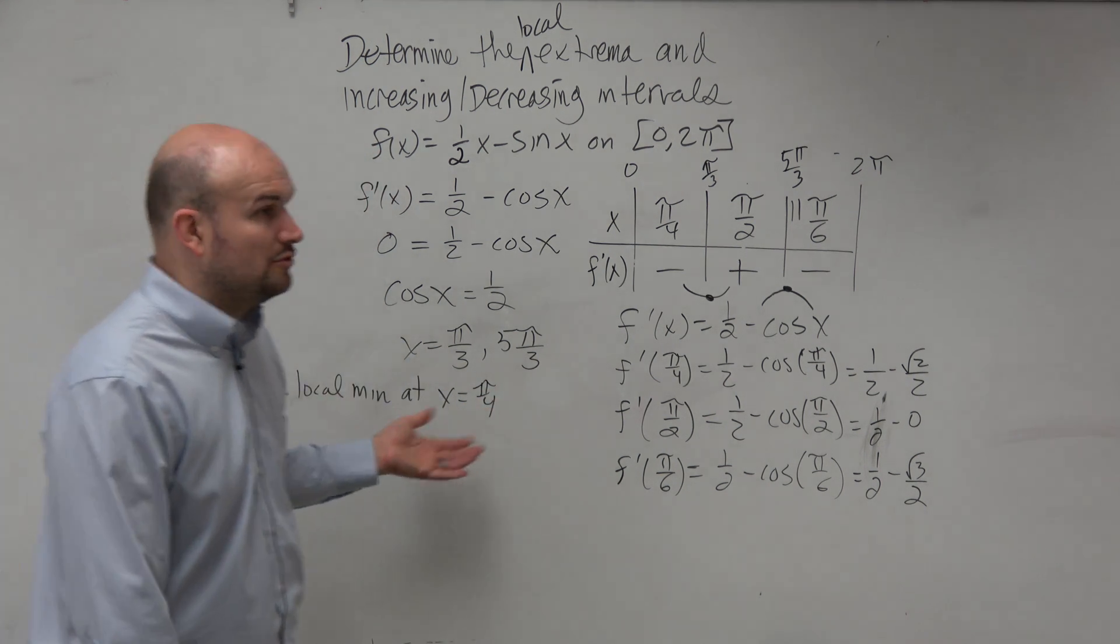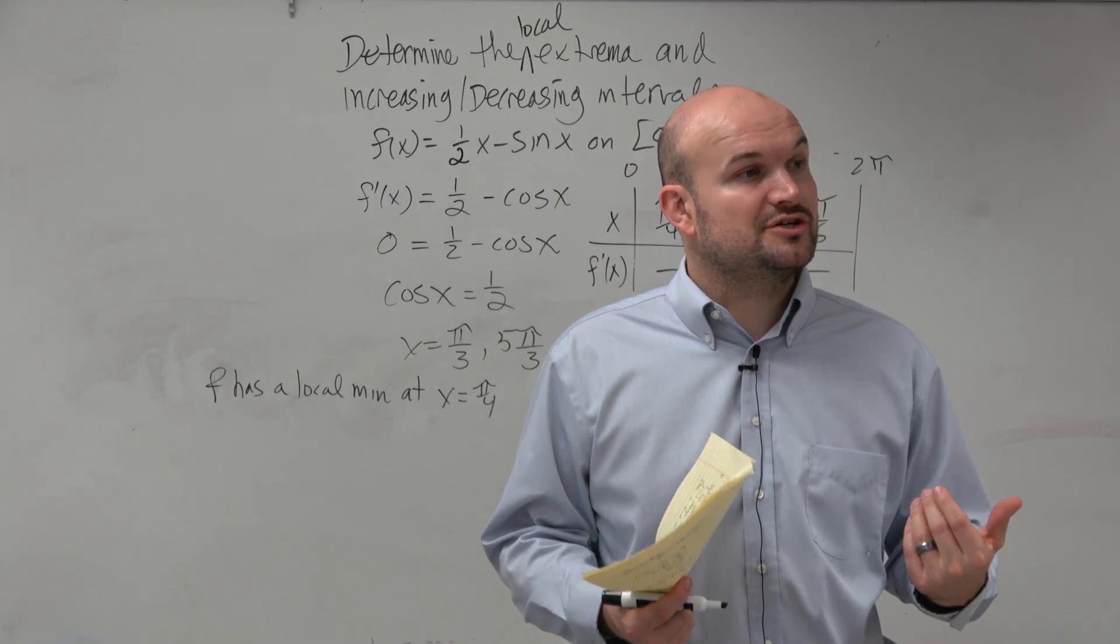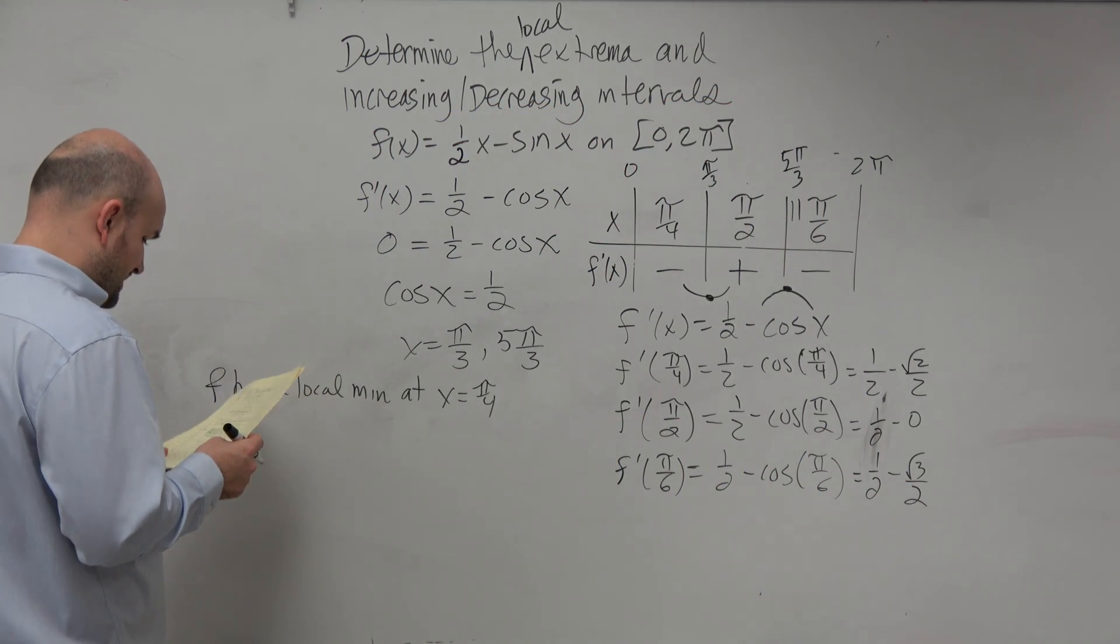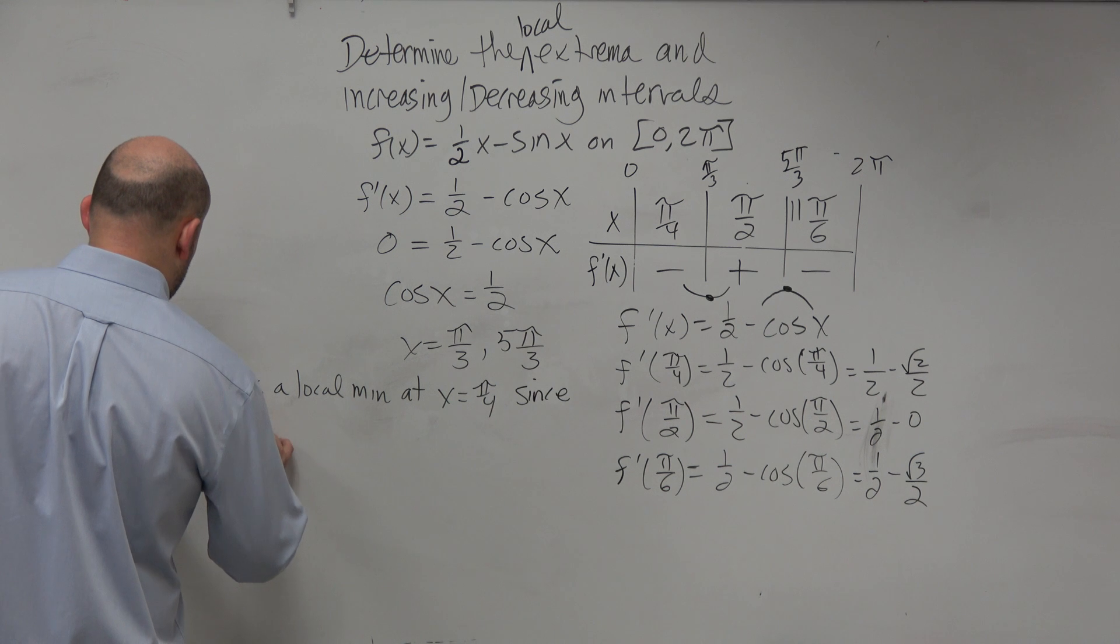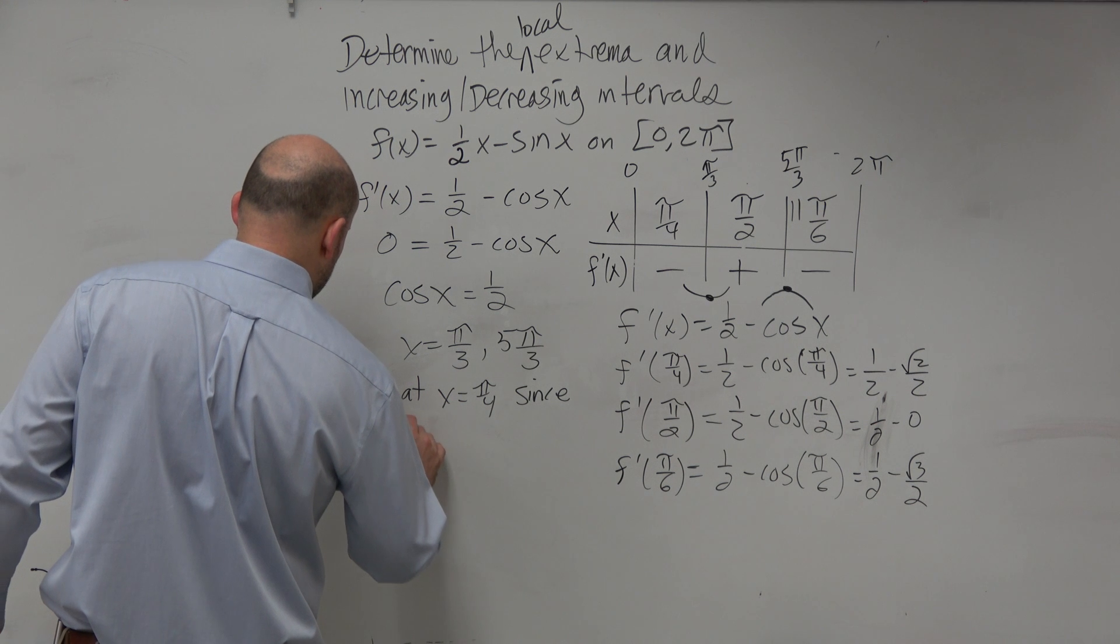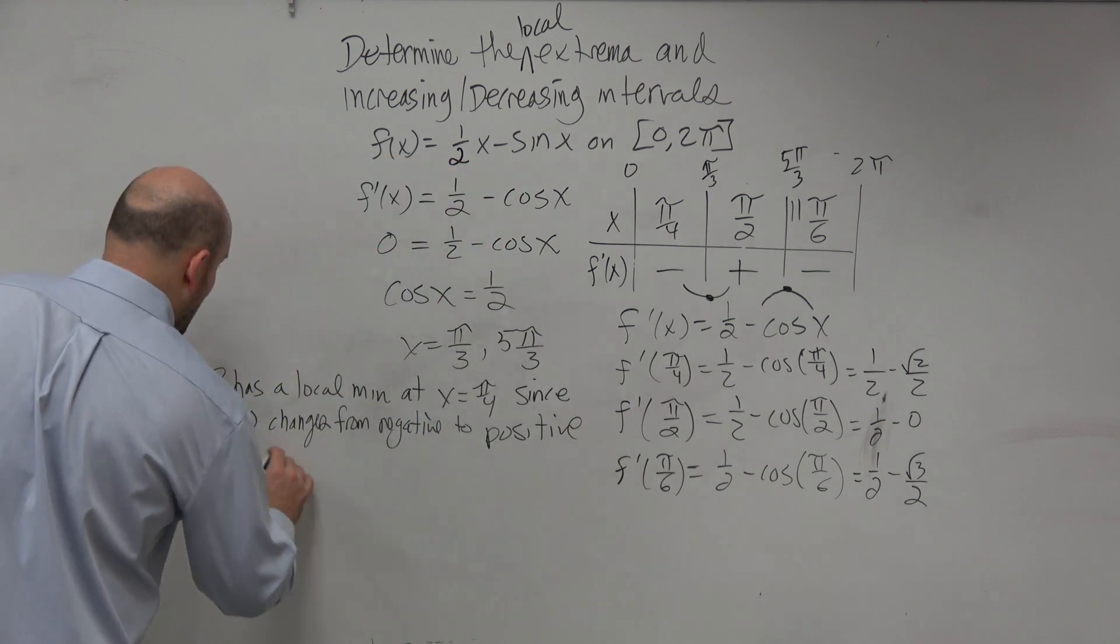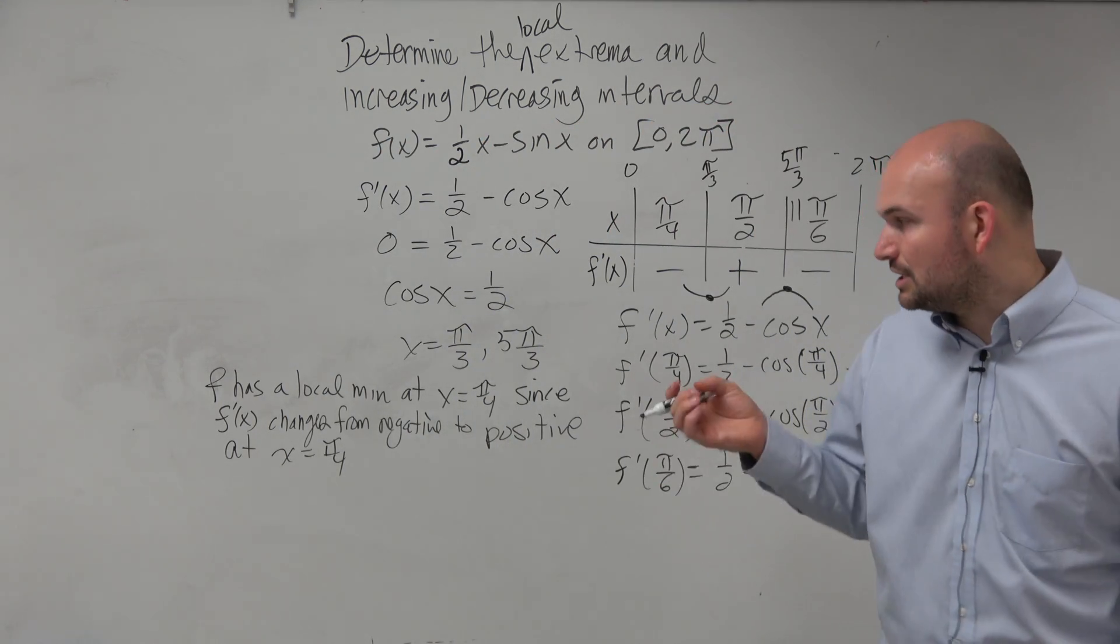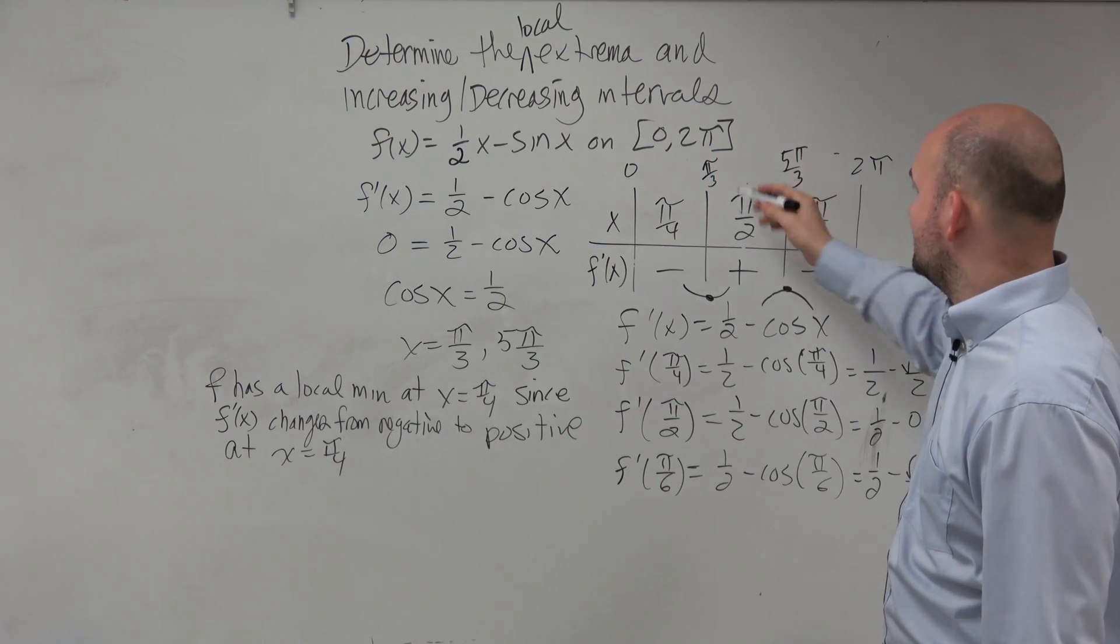So we'll say over here f has a local min at x equals π over 4. Now, again, I'm saying it has a local minimum at x equals 4. Or if they did ask for the point, we'd have to make sure that you included the x and the y coordinate. But I'm not asking for the point. I'm just saying determine the extreme of value. So at x equals 4, since f prime of x changes from negative to positive at x equals π over 4. I know it's a lot to write, but that is what is expected. It is at π over 3. Thank you about that. Don't want to make that mistake. π over 4 is our test point.